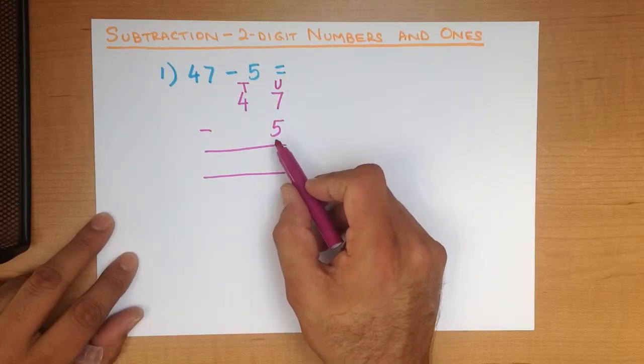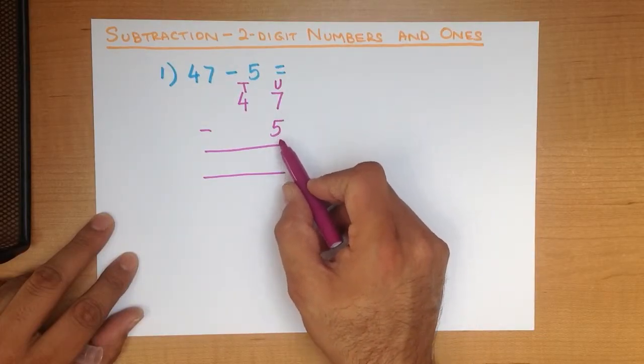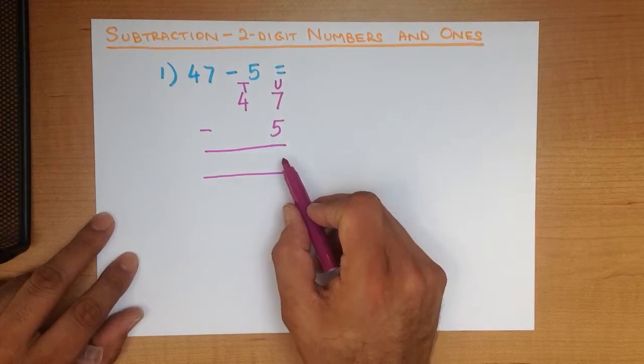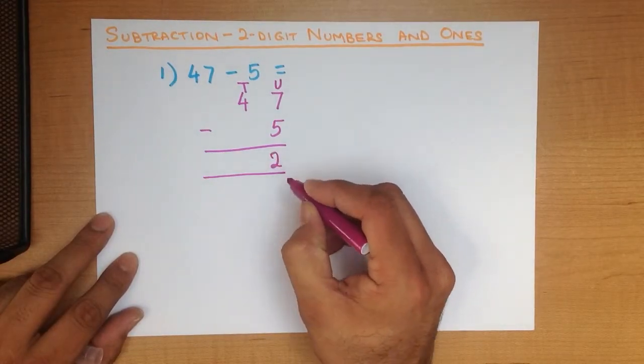So let's do this. Units, the column on the right-hand side. What is 7 minus 5? 7 minus 5. That's right. It is 2.